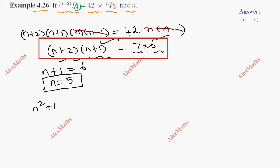Expanding: n² + n + 2n + 2 equals 42. This becomes n² + 3n minus 40 equals 0. The product is minus 40 and sum is 3.